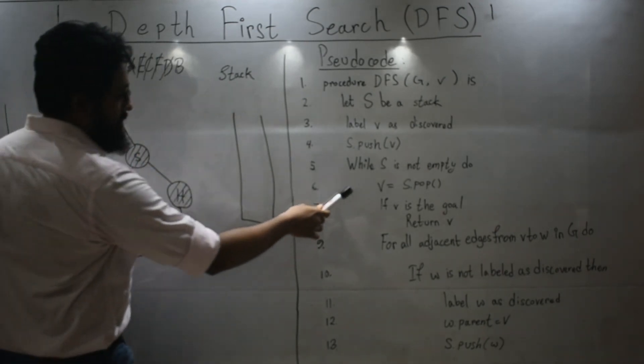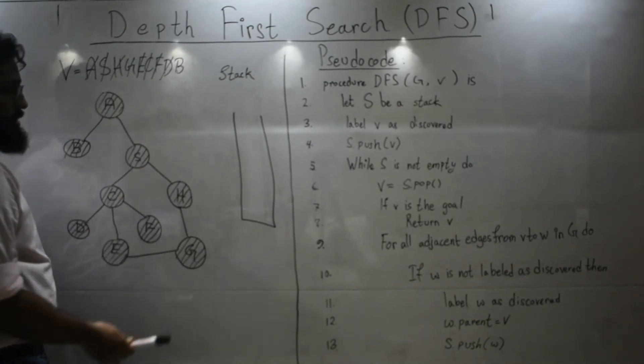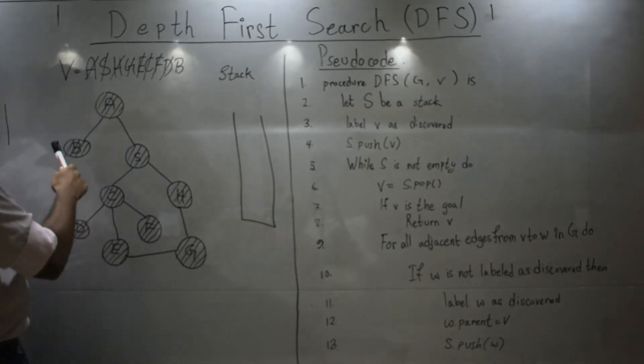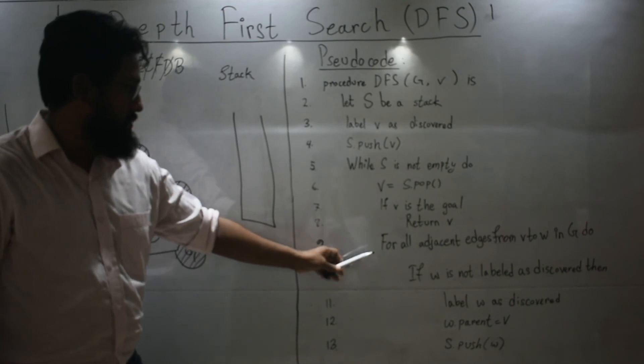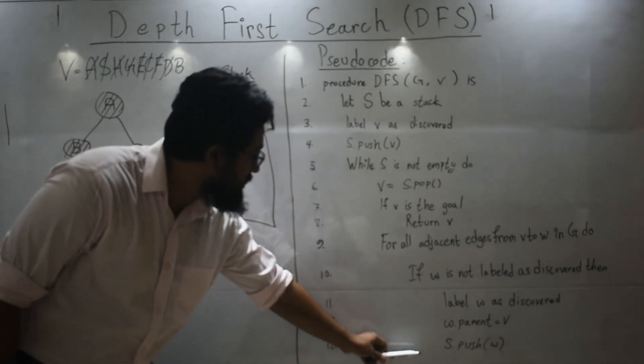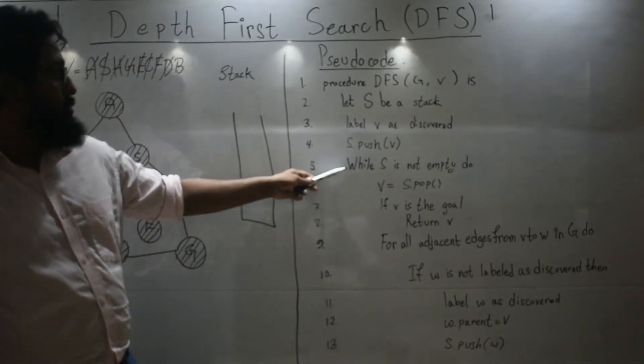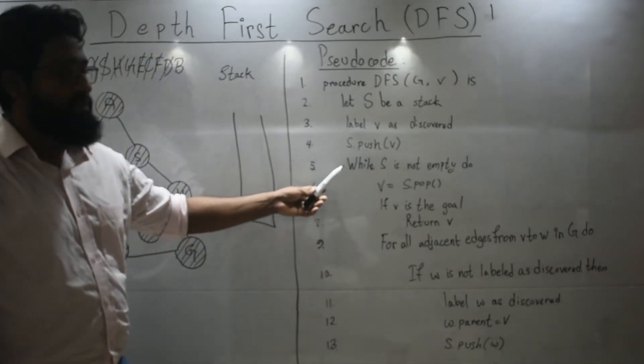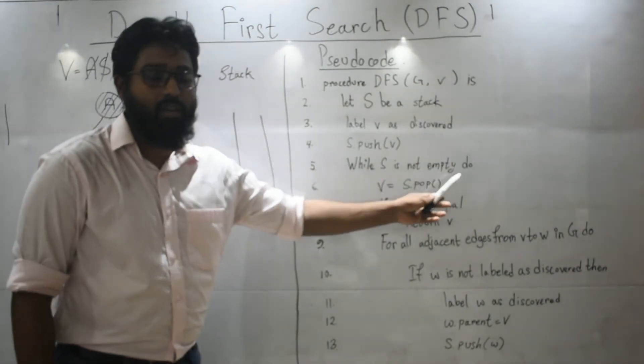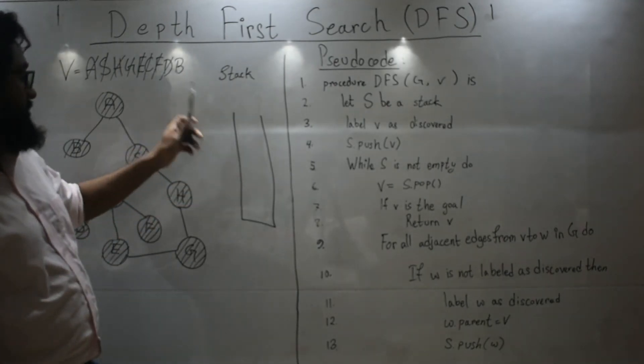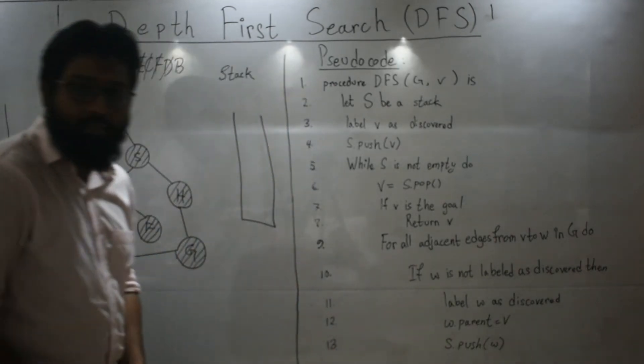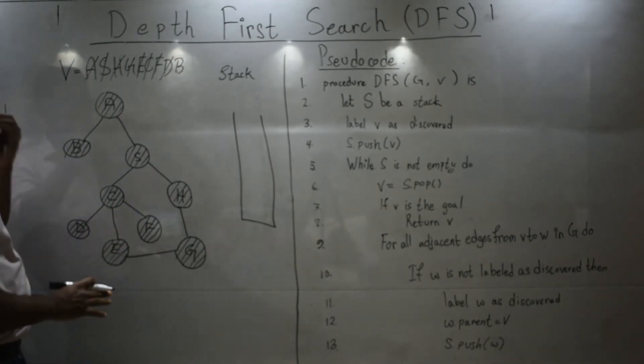Okay now the value of V is B. You will see same case in case of B. All of its neighbors have been visited. So you will not follow this and simply you will not even come back to this line because your stack has become empty right now. So once your stack is empty and the value is B, your program will exit and the depth first search algorithm has been completed.